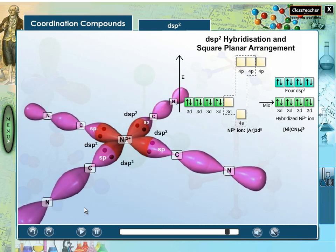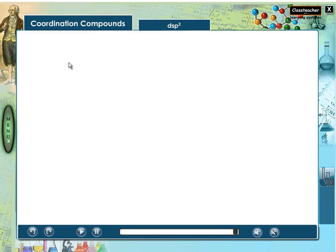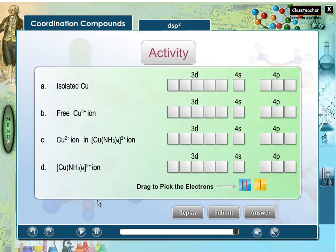The compound is diamagnetic due to the absence of unpaired electrons.